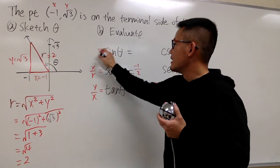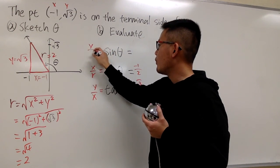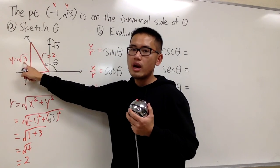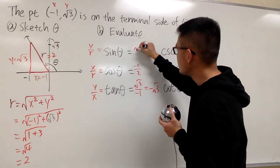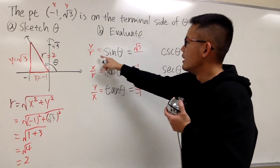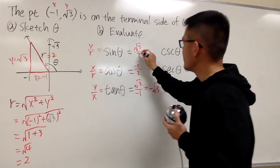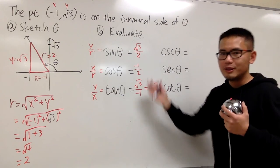Sin theta, sin is y over r, y is square root of 3, so let's put that down, over r is 2, so we have square root of 3 over 2. So this is it.